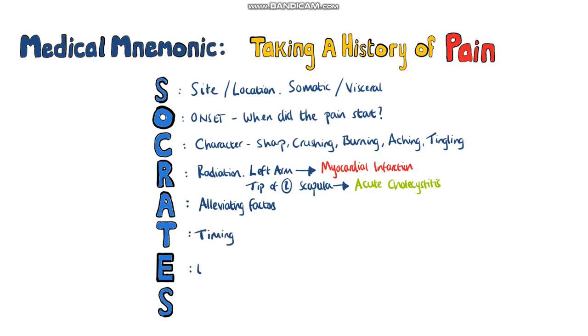T is for timing. E is for exacerbating factors. And S is for severity — you usually ask for a scale of 1 to 10, with 10 being the worst pain the patient can imagine.